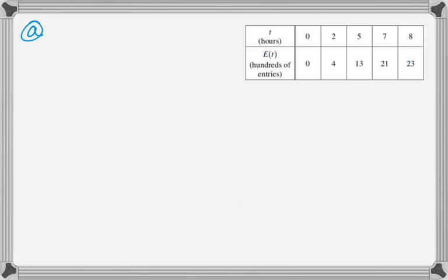Let's see what we're going to do here. A zoo sponsors a one-day contest to name a baby elephant. Zoo visitors deposit entries in a special box between noon, which is t equals zero in our table, and 8 p.m., which is t equals eight in the table. The number of entries in the box t hours after noon is modeled by a differentiable function E between zero and eight. And then they tell you that the values of E of t are in the table.